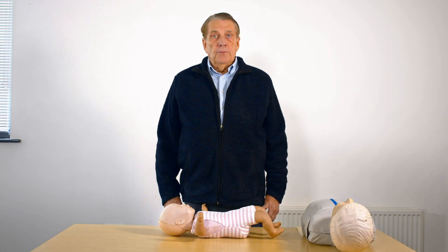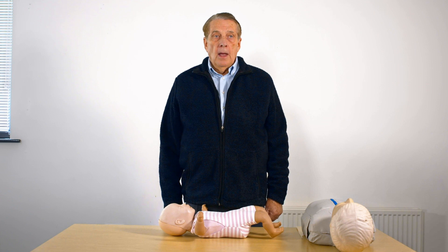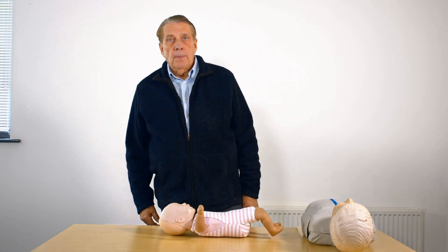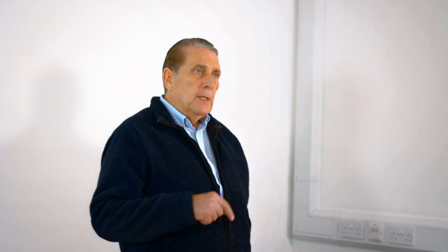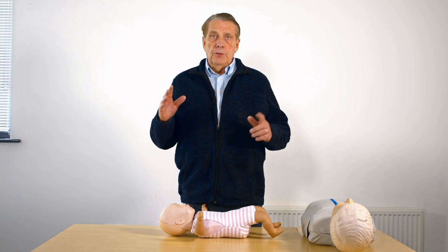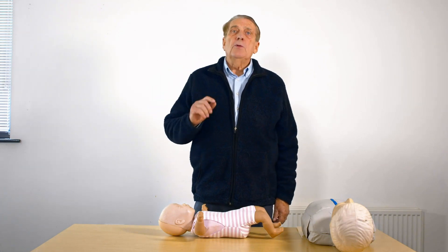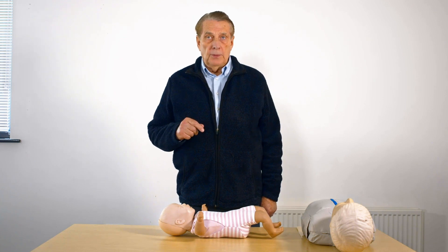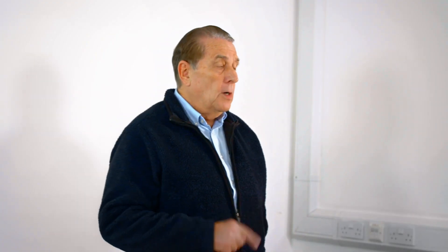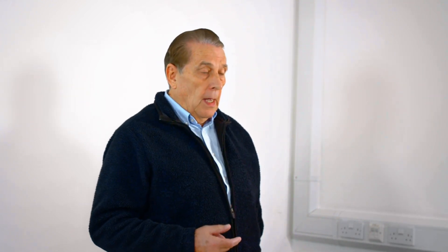The number one cause of death in children is always respiratory. When is a baby not a baby? At one year old — after one year old they become children until puberty, and after puberty we'd always treat them as a small adult. So we have a baby under one year old, and the number one cause of death is always respiratory.